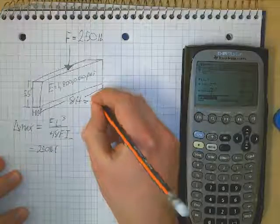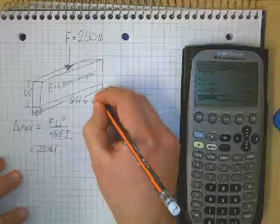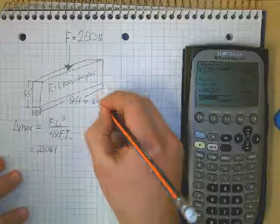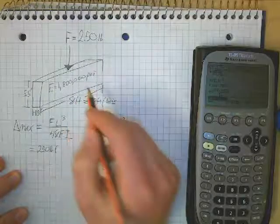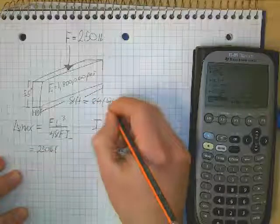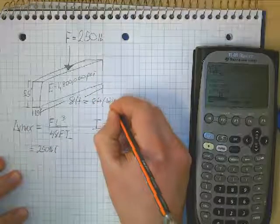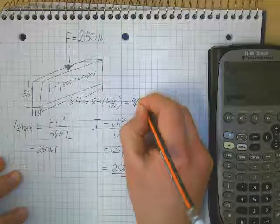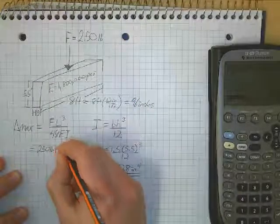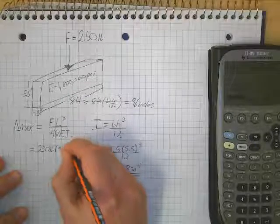I have to take 8 feet times 12 inches per foot. Because everything else is in inches, or psi, I need to make sure that my feet are also in inches. So if I do that, I get 96 inches. So I'll take times 96, and that has to be cubed.